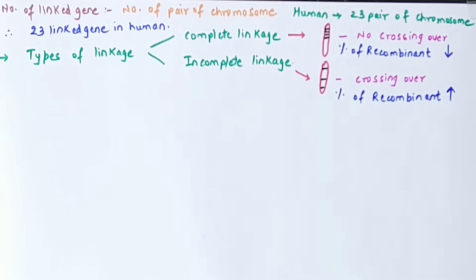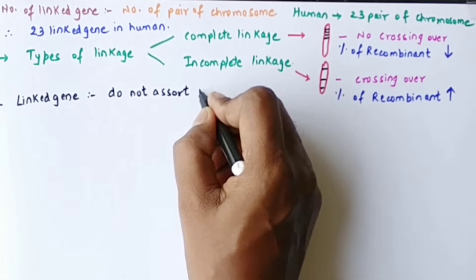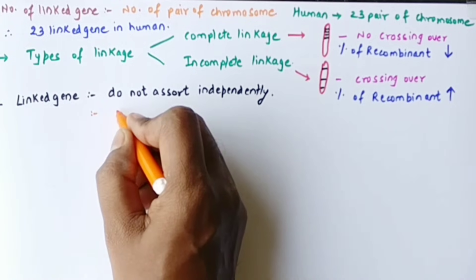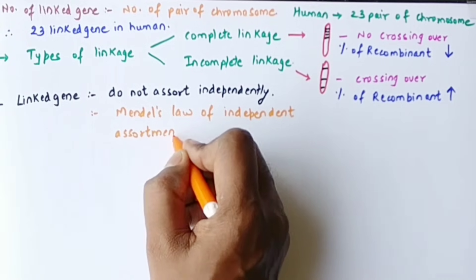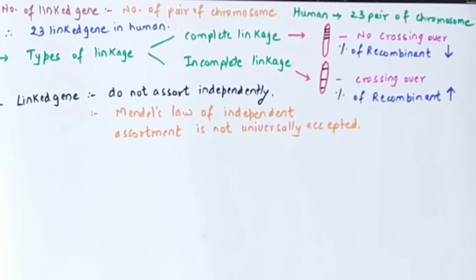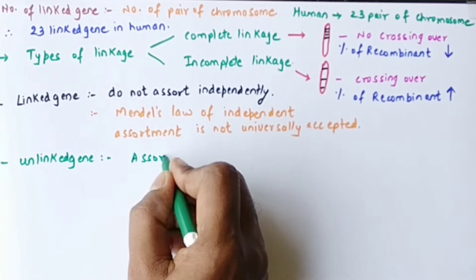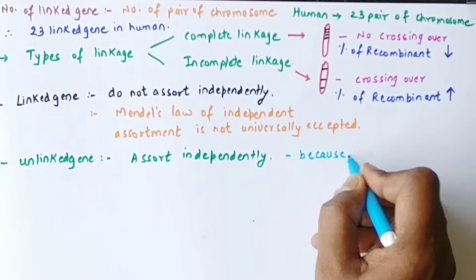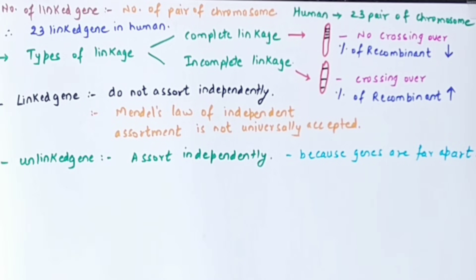Linkage is all about distance between genes and recombinants. Linked genes do not assort independently. Mendel's law of independent assortment is not universally accepted because of linkage. Mendel studied pea plants where the genes were very far apart from each other, so there was no complete linkage and the genes appeared to assort independently. However, this is true only with respect to Mendel's pea plant — unlinked genes assort independently.